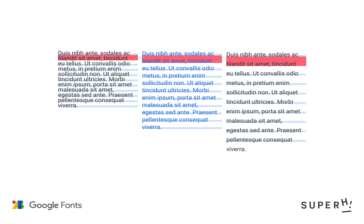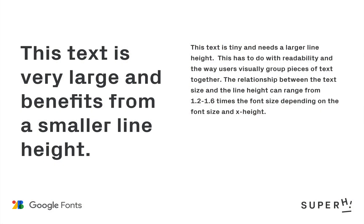Line height can be measured in points, pixels, percentages, ems and rems. The relationship between the text size and the line height usually ranges from 1.2 to 1.6 times the font size, depending on the size of your font and the x-height. Generally speaking, a larger font size may benefit from having a smaller line height, whereas a smaller font would benefit from having a greater line height.